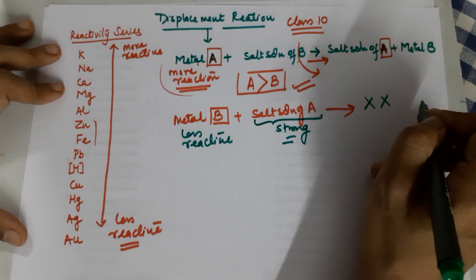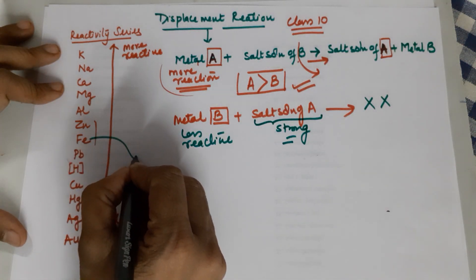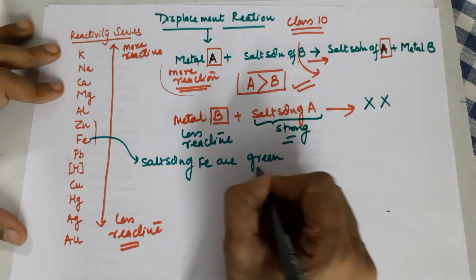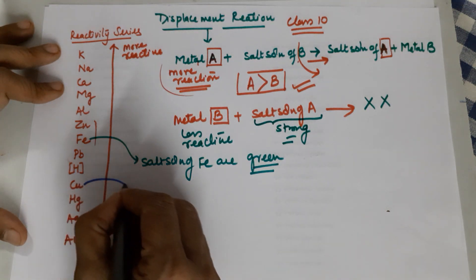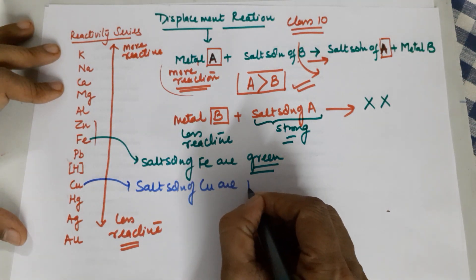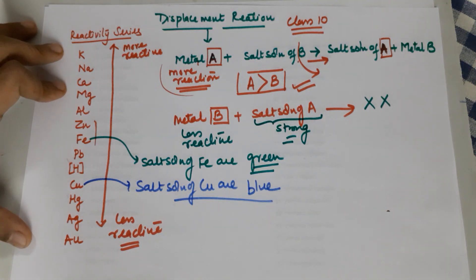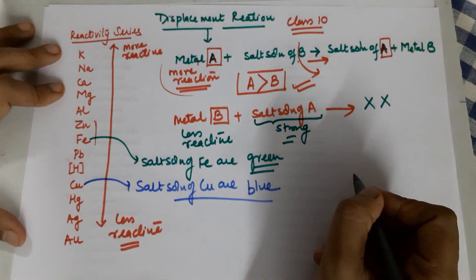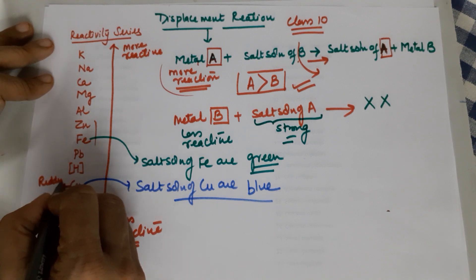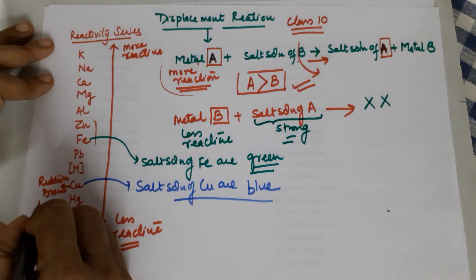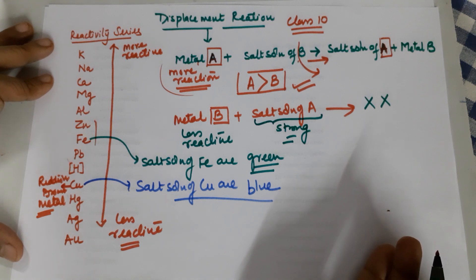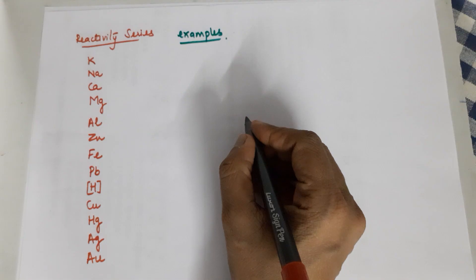Before going into examples, you need to understand that salt solutions of iron are green in color and salt solutions of copper are blue in color. I have deliberately used those colored pens so that you remember it for life. Also, copper metal is reddish-brown in color but its salt solution is blue in color. This information you should know before we move ahead.